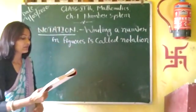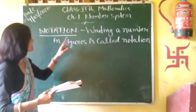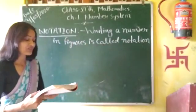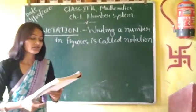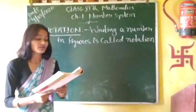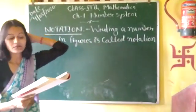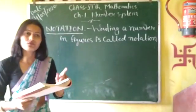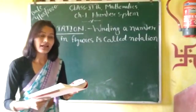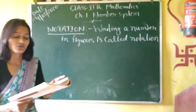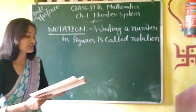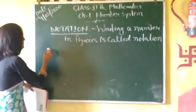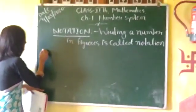Writing a number in figures is called notation. Next, numeration. Numeration means writing a number in words. Writing a number in words is called numeration.